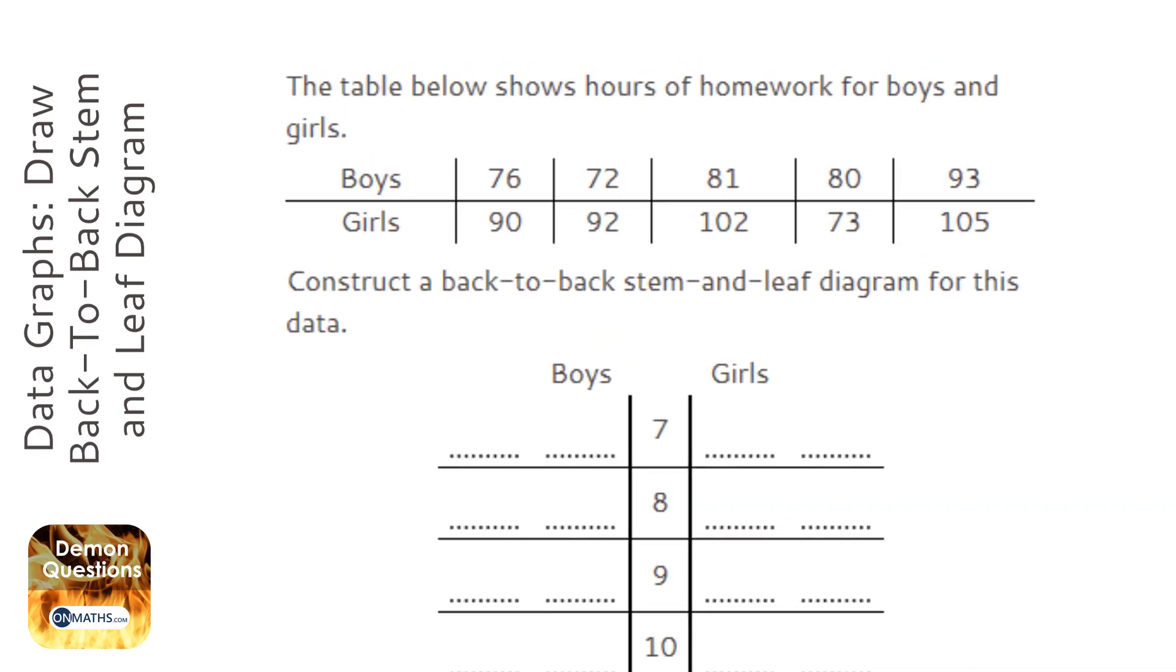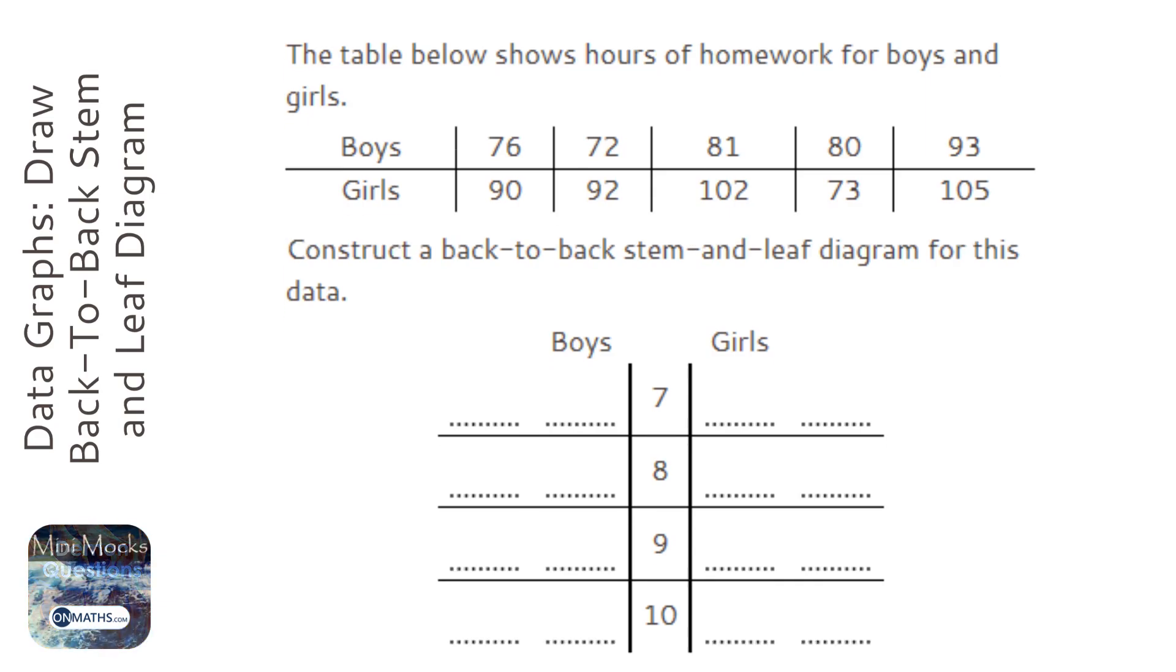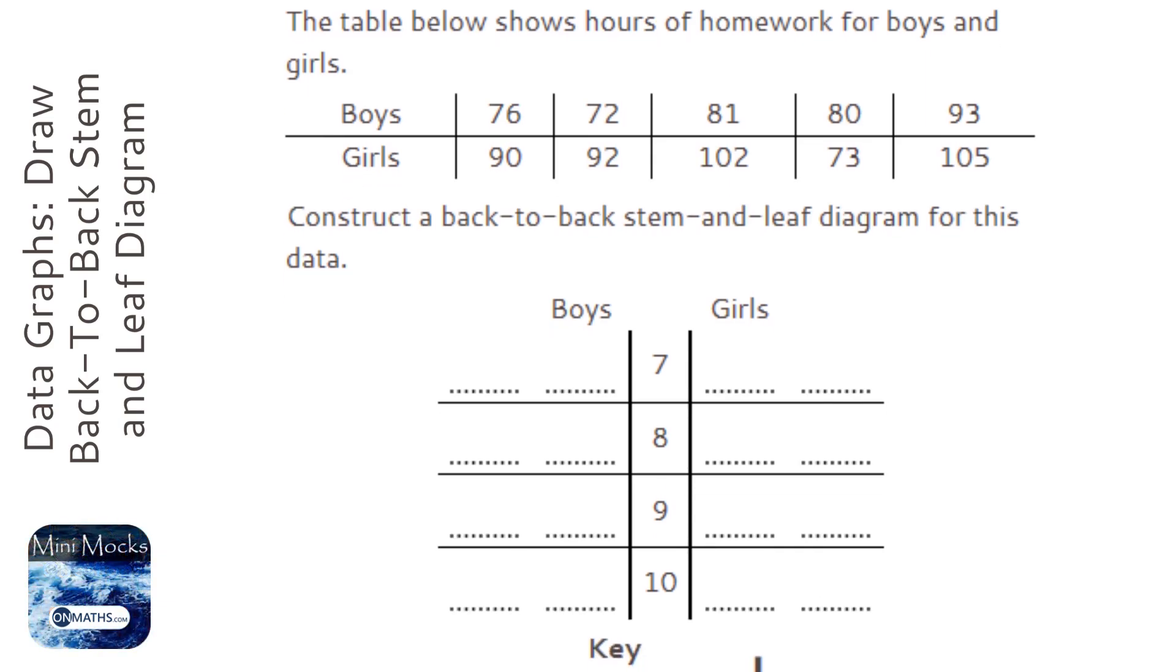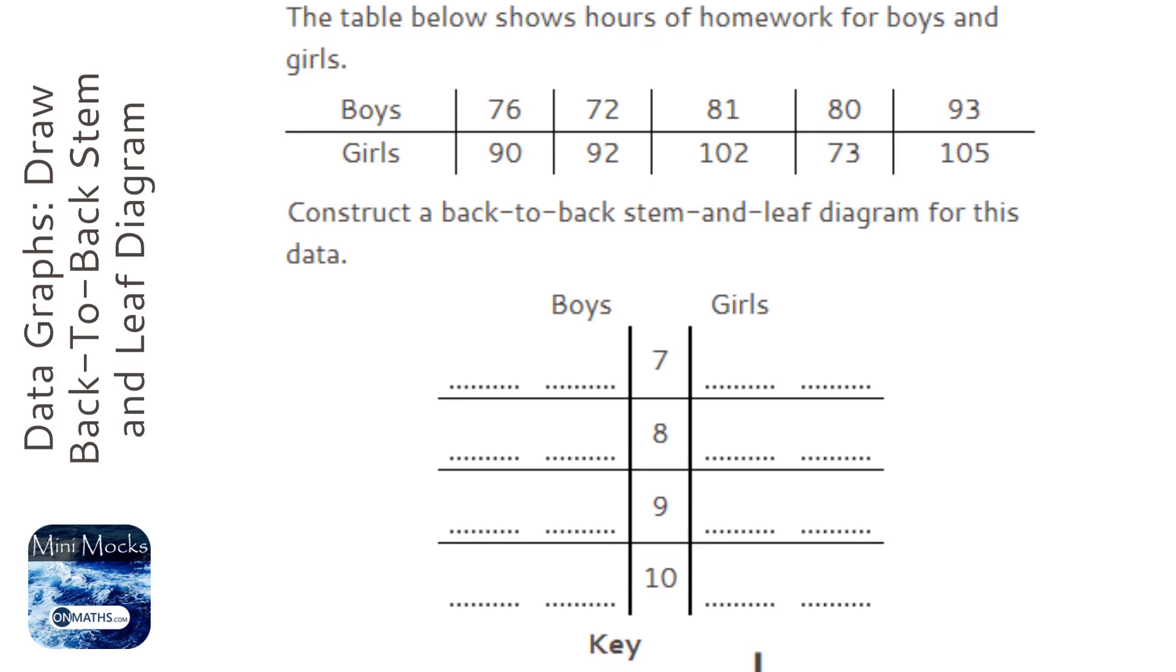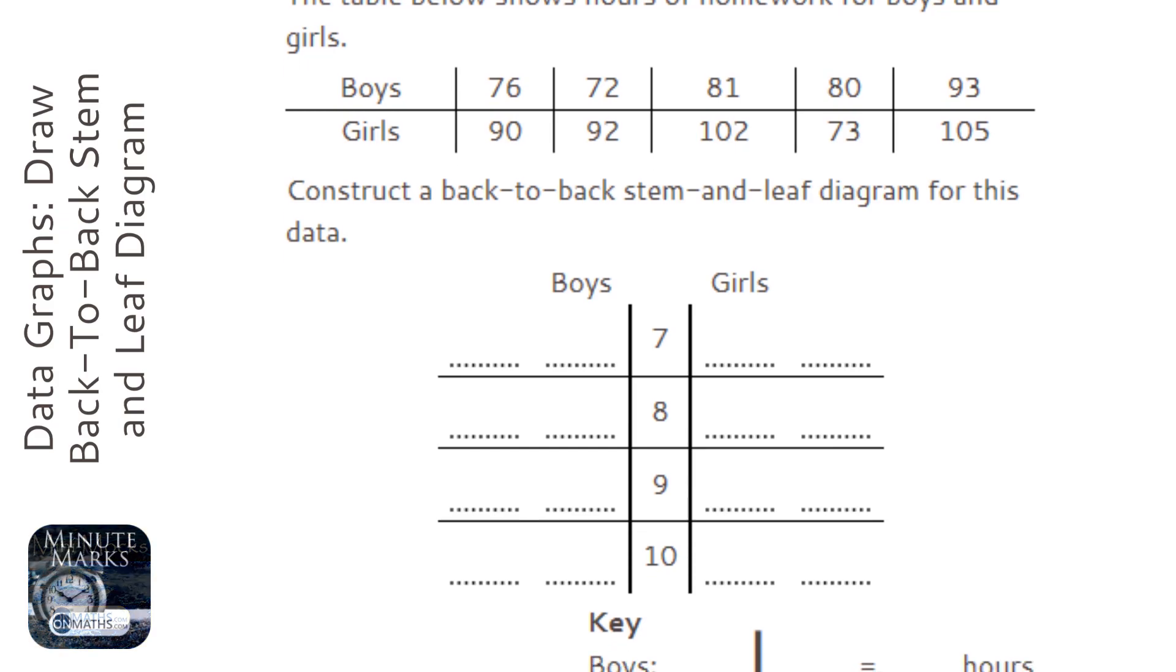We're asked to construct a back-to-back stem and leaf diagram with girls on the right and boys on the left. Now girls is probably easier for us to fill out. Some people like to write all the numbers in order of size first, some like to do an unordered stem and leaf diagram and then do an ordered one, and some just like to do it as they go along. This last method is the riskiest but also the quickest, so I'm going to try and do it as I go along.